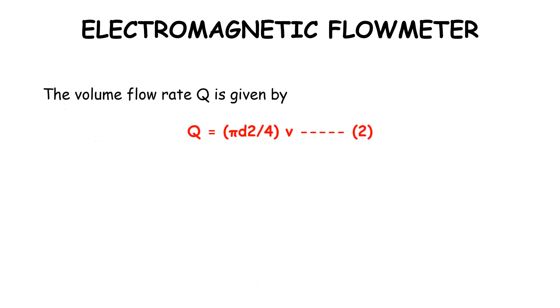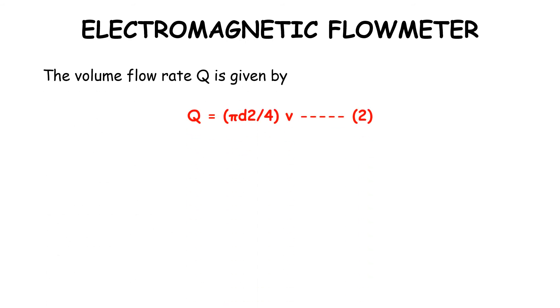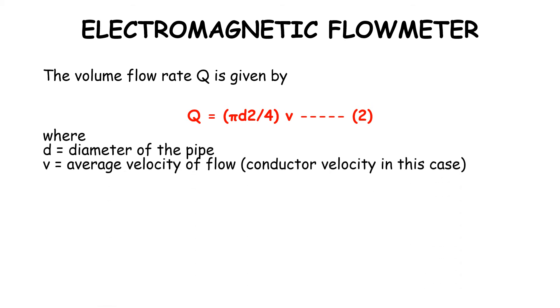The volume flow rate Q is given by Q = (πd²/4)v, where d is the diameter of the pipe and v is the average velocity of flow. From that equation we get v = e/Bl, and Q = πd²e/4Bl. Hence it is given by the formula Q = Ke, where K is a meter constant.